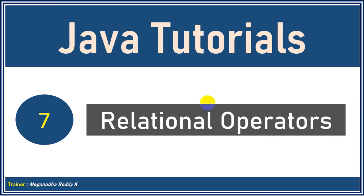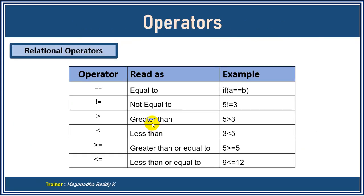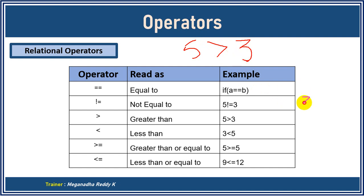Relational operators are normally used to compare or to see the relation between two values or two operands. Let's take five and three — the relation between these two is that five is greater, so you write five greater than three. Or if you put three first, you compare three and five.